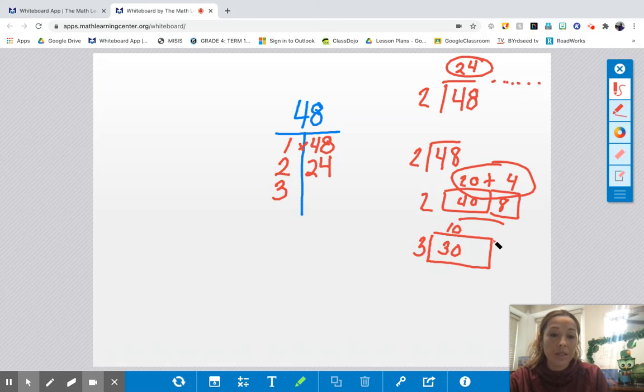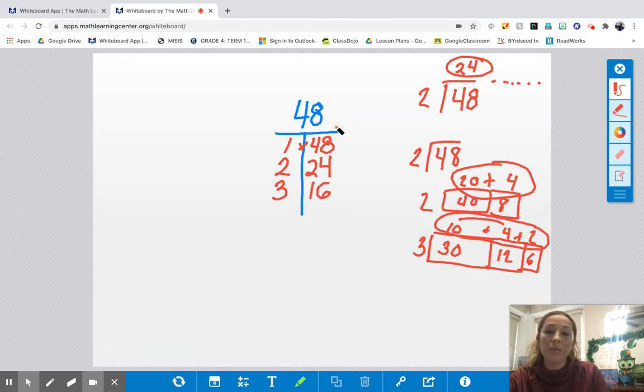Or you can solve it out. See, I know that that makes 30. I know that I can make 12 with 3. That's 42. I need 6 more. And there is my other factor. 10, 4, and 2 is 16. So 3 times 16 works to 48.